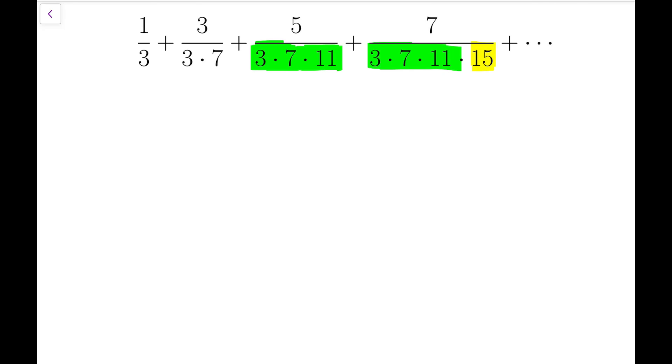So we might consider the difference of 1 over each of these two numbers. For example, 1 third minus 1 over 3 times 7, 1 over 3 times 7 minus 1 over 3 times 7 times 11, and so on.